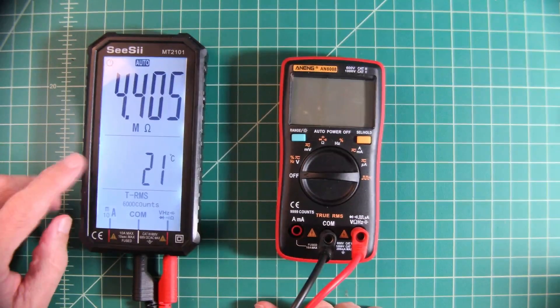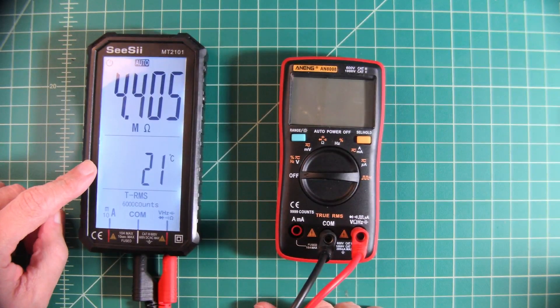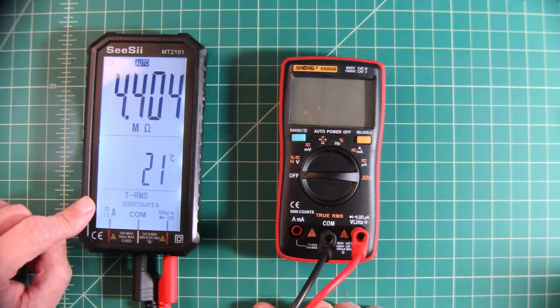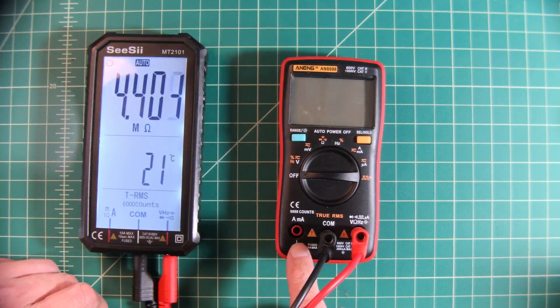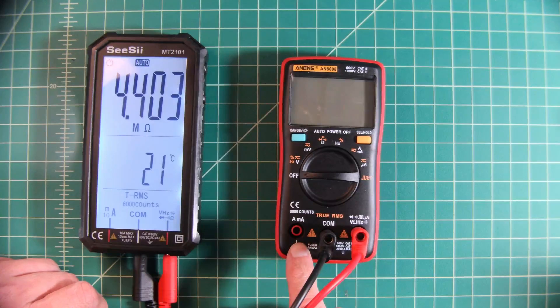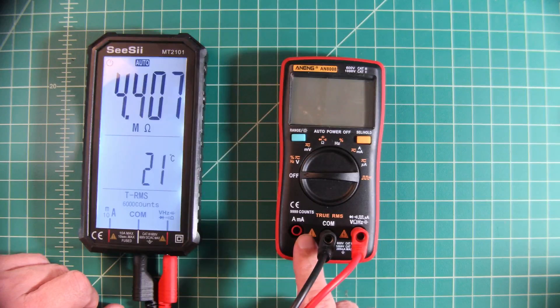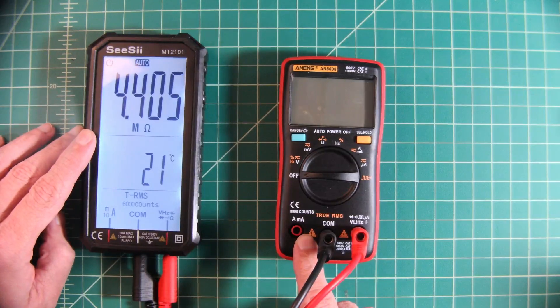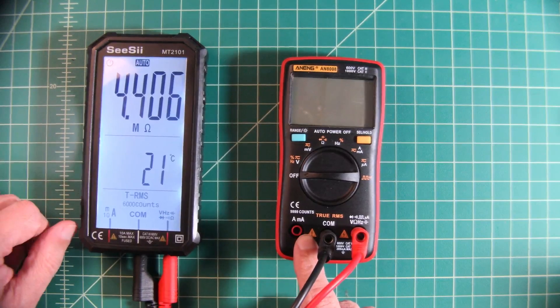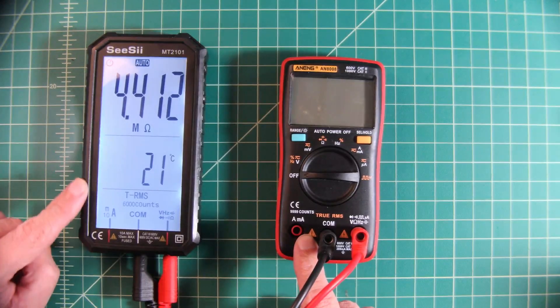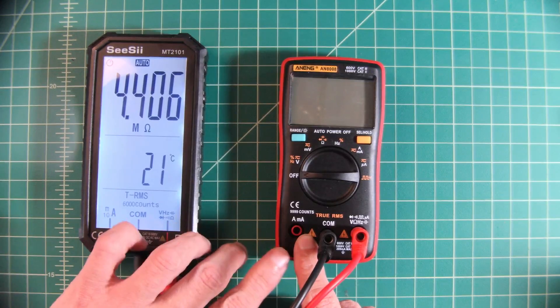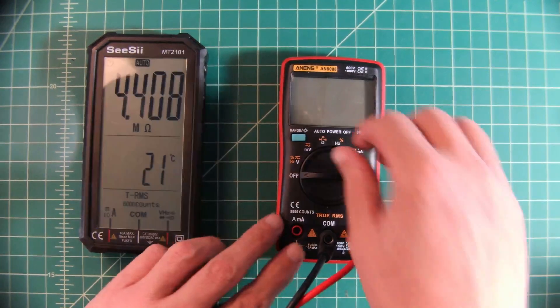All right so here I have the CCMT 2101 and it is connected to this NANG AN8008. The reason we're using this NANG 8008 is that it has a frequency output. This is set to auto so it will detect what we're trying to measure. Right now it's doing a resistance measurement because this meter is not on. So let's go ahead and turn this on.